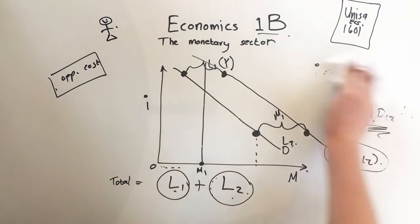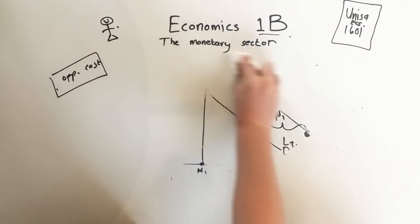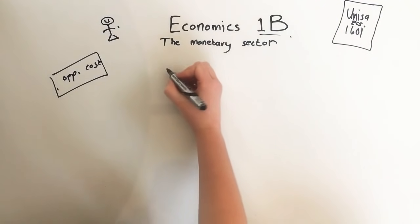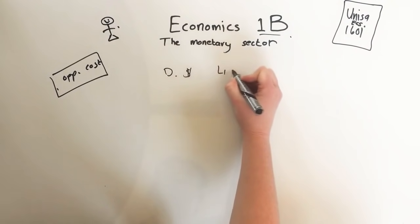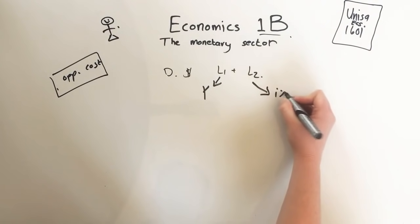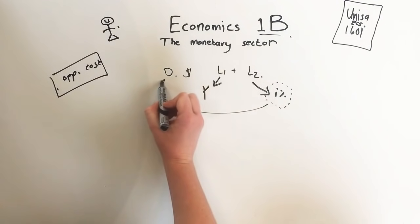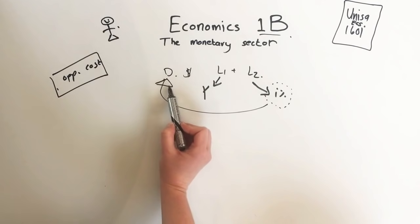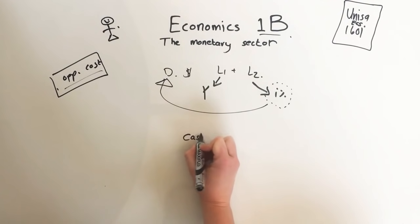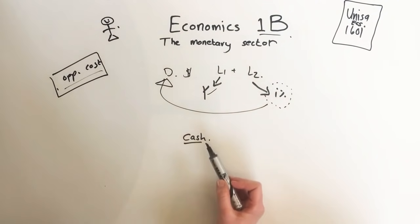Now I'm going to talk about bonds and opportunity cost for money. The demand for money — L1 plus L2 — depends on income level Y for L1 and the interest rate for L2. But what does the interest rate have to do with the demand for money? The answer is it's all about opportunity cost. If you have cash in your pocket, that's for transactional reasons. But you could also keep money for speculative reasons.